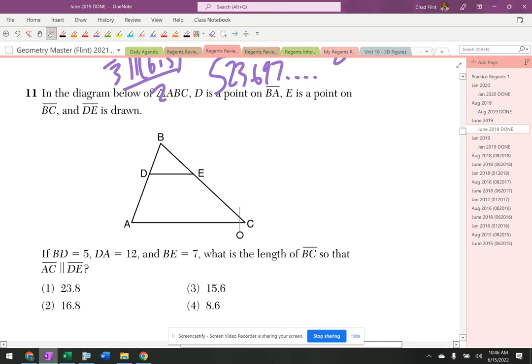And the type of questions that they love to ask things about are these similar triangle questions that are buried inside of another question. So it says D is a point on BA, E is a point on BC.